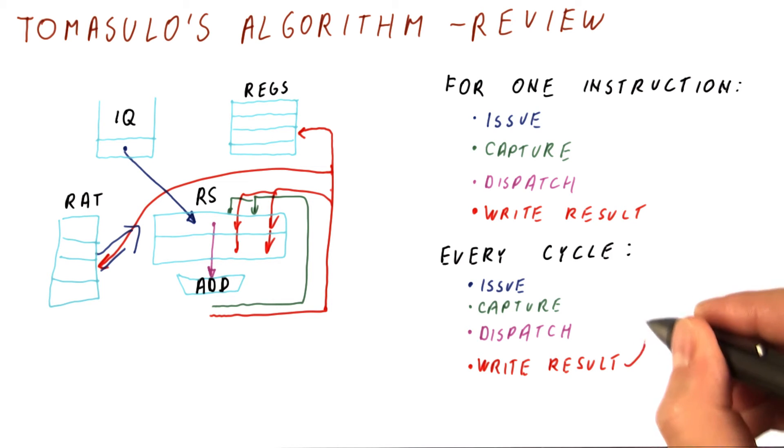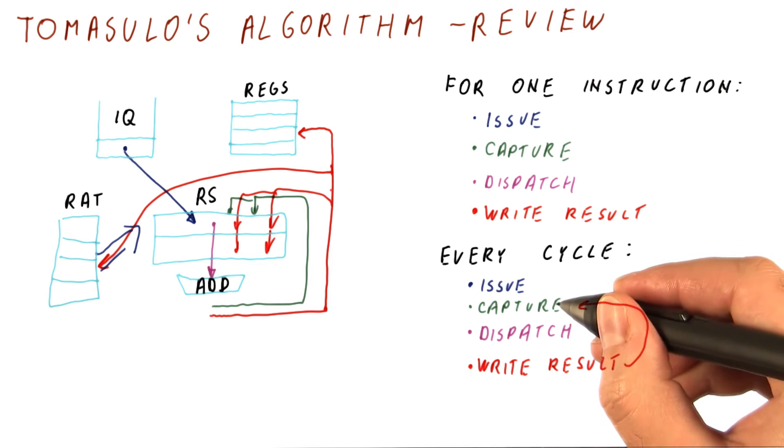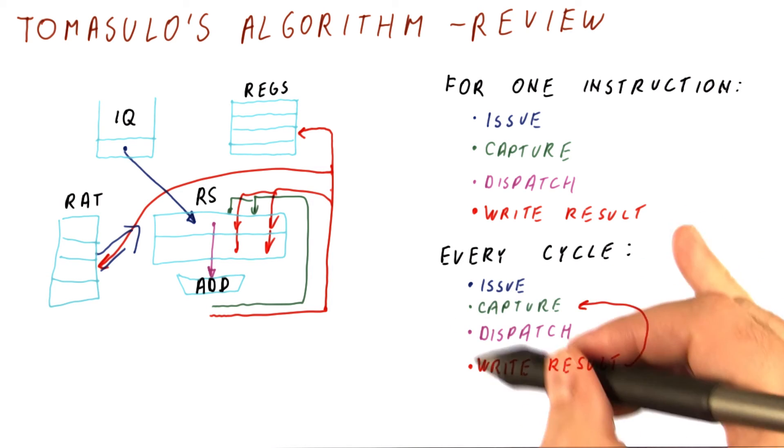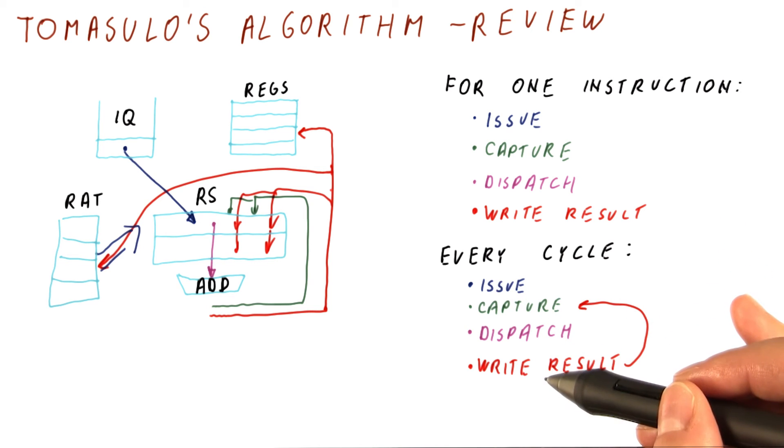And that is the result that is being captured by the instructions that are trying to capture. So all of this activity is happening during every cycle, it's just that it's happening for different instructions.